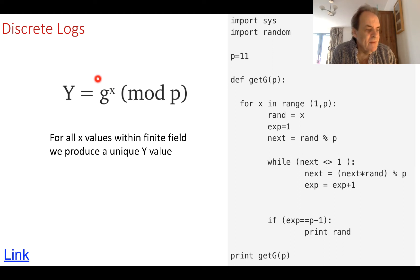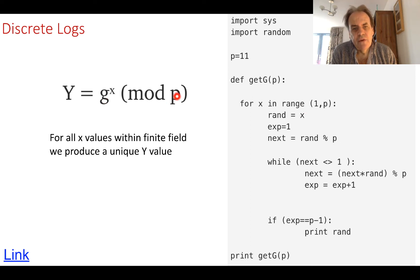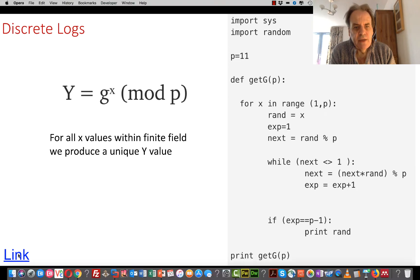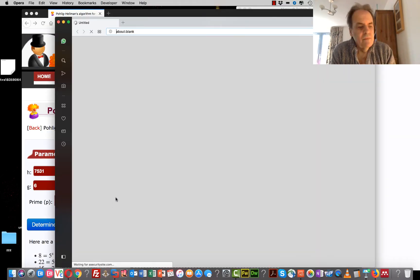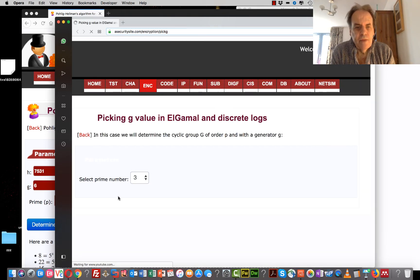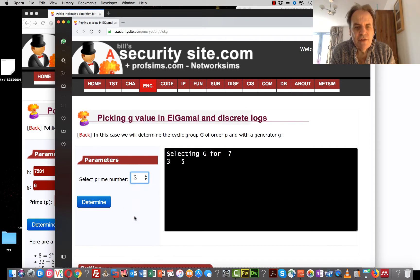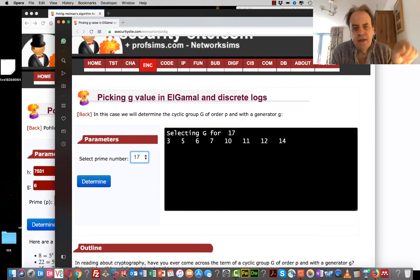This method won't always work for all G values. What we want for the G value is that for every value up to P minus 1 we should get a unique Y value on output. This basic Python program determines the values of G that are possible for a given P value, giving us a cyclic output over the full range. For example, selecting a prime P of 17, the valid G values are 3, 5, 6, 7, 10, 11, 12, and 14 — we can't pick any other value for G if we want a unique output for X within the finite field.